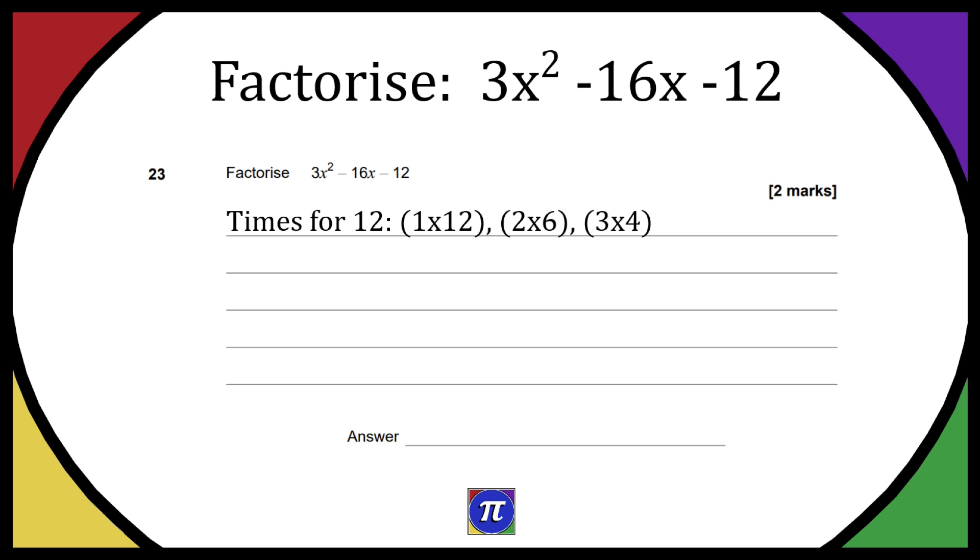Next, let's get the brackets formed. We're going to have a 3x in one bracket and an x in the other bracket. That's the only variation of the x's we can do, because that's going to give us 3x². We know it's not going to be any other combination for that.